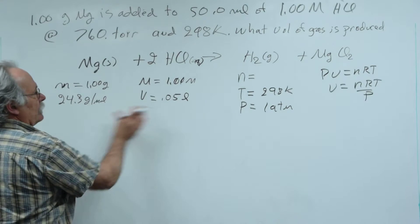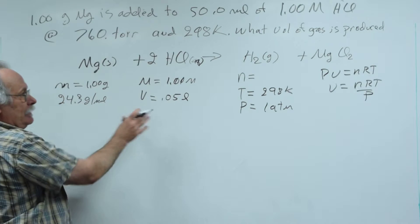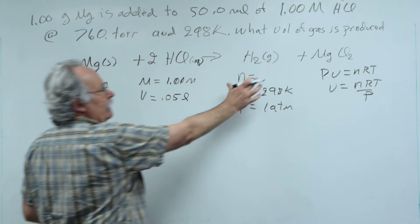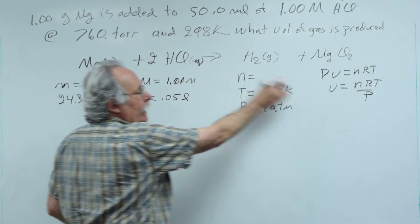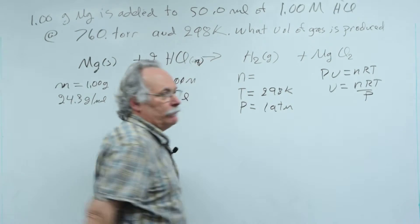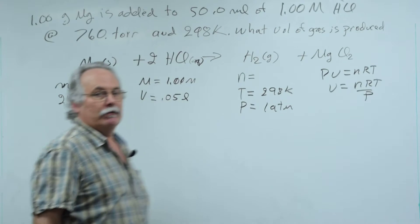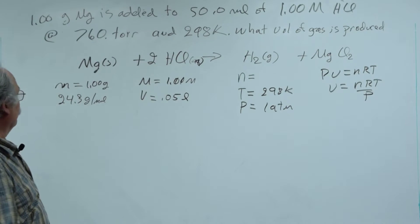So, I have to figure out what is my limiting reagent. From the complete consumption of the limiting reagent, I can calculate my moles hydrogen. And then, I can place my moles hydrogen into my equation of state, and determine the volume of gas produced.